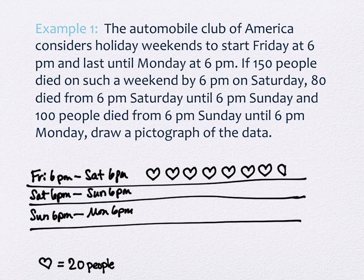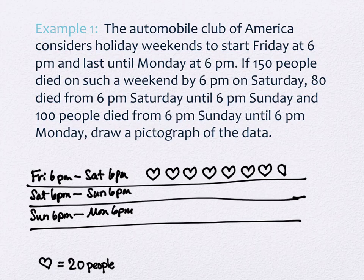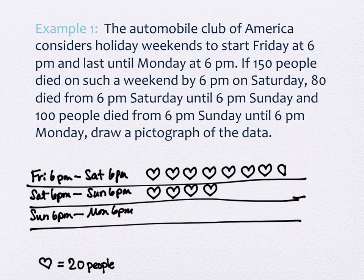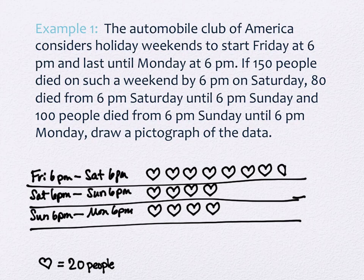You should very quickly be able to see four hearts lining up in the second row. For Sunday 6 p.m. to Monday 6 p.m., there are 100 people — that's 5 hearts. So I'll place five hearts in the last row, lined up and approximately the same size.